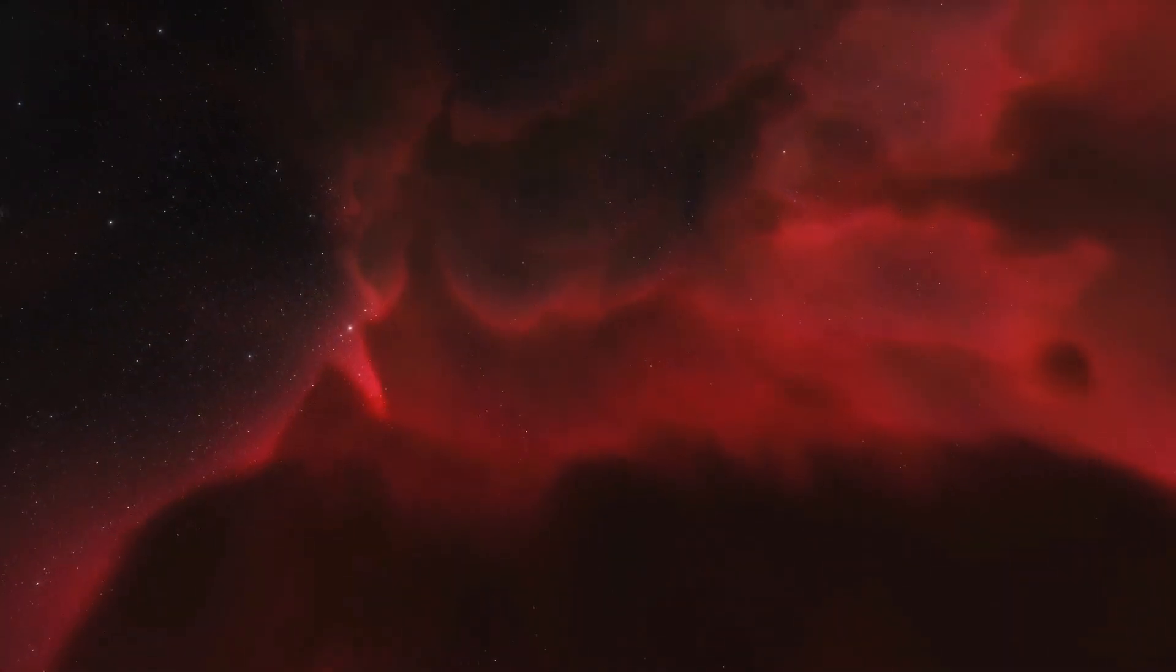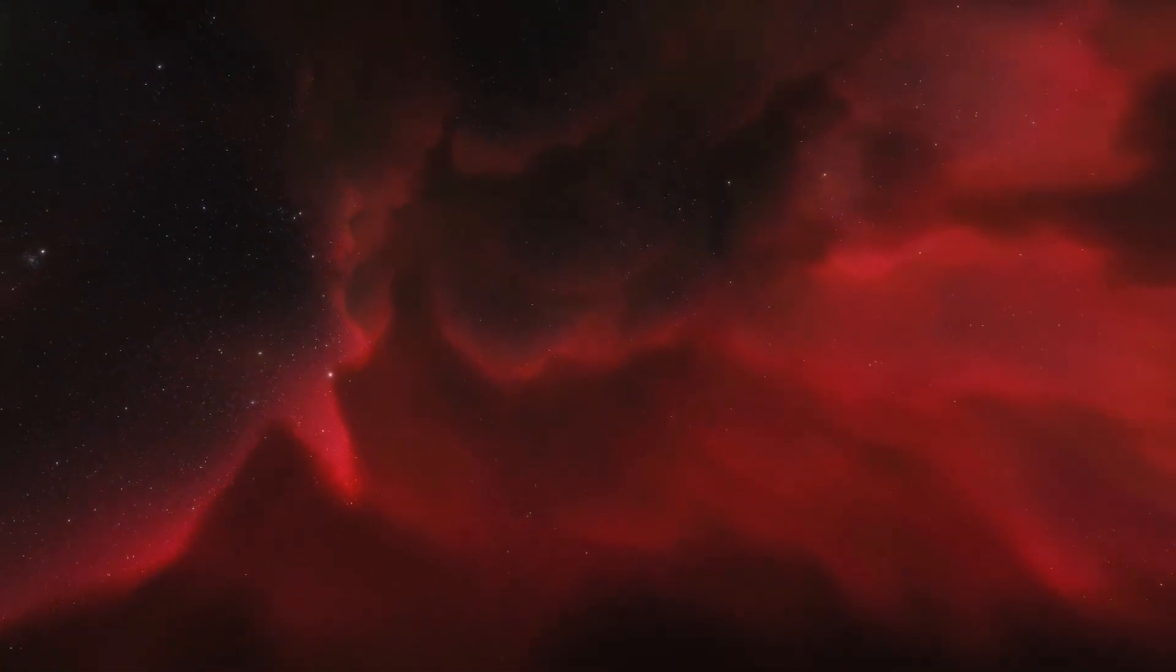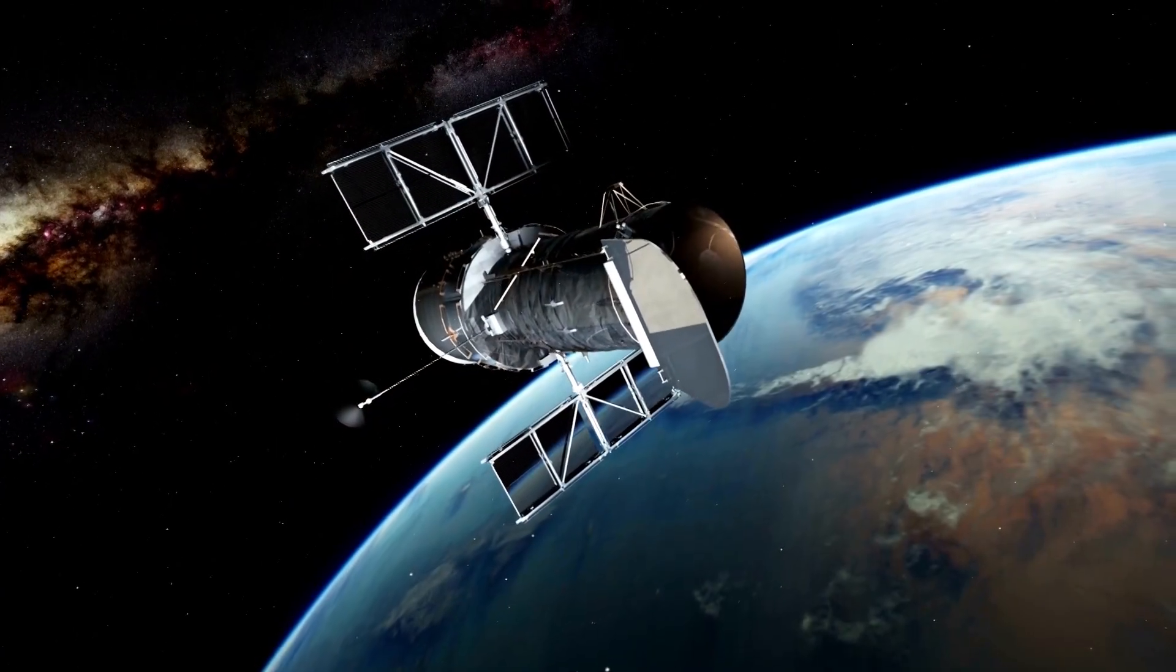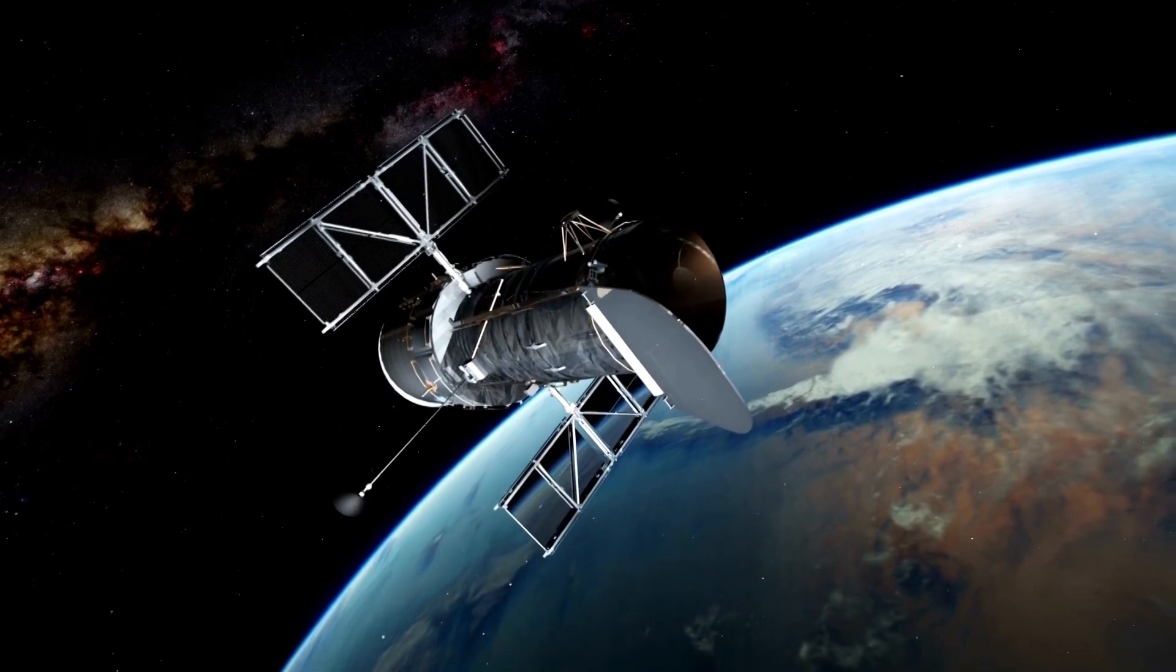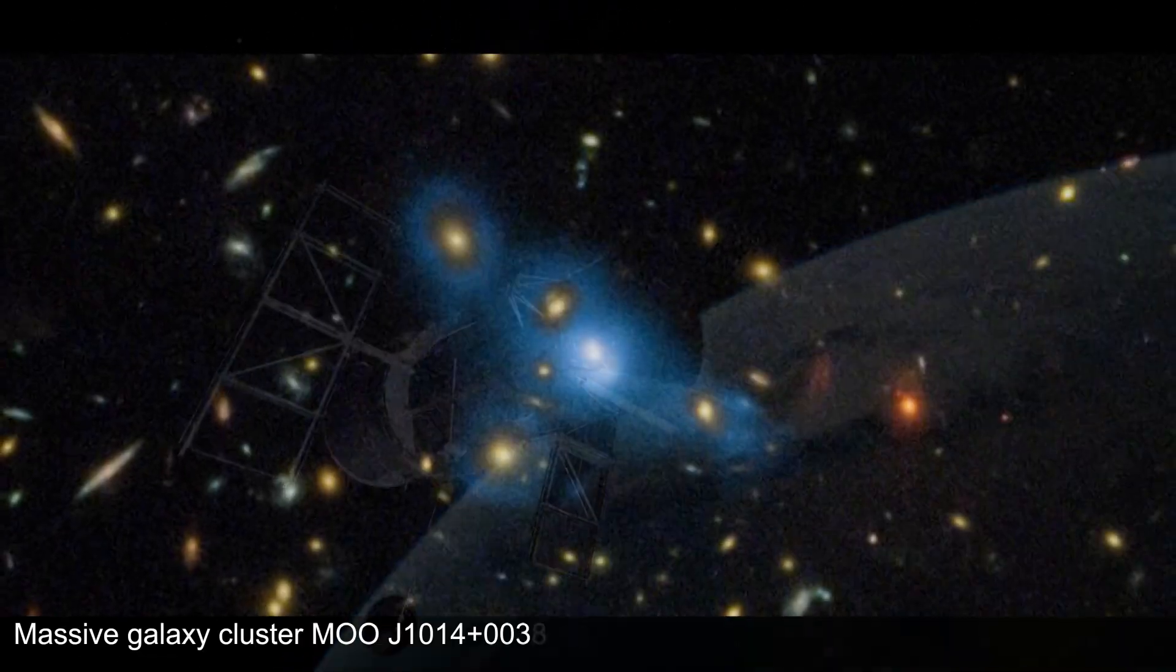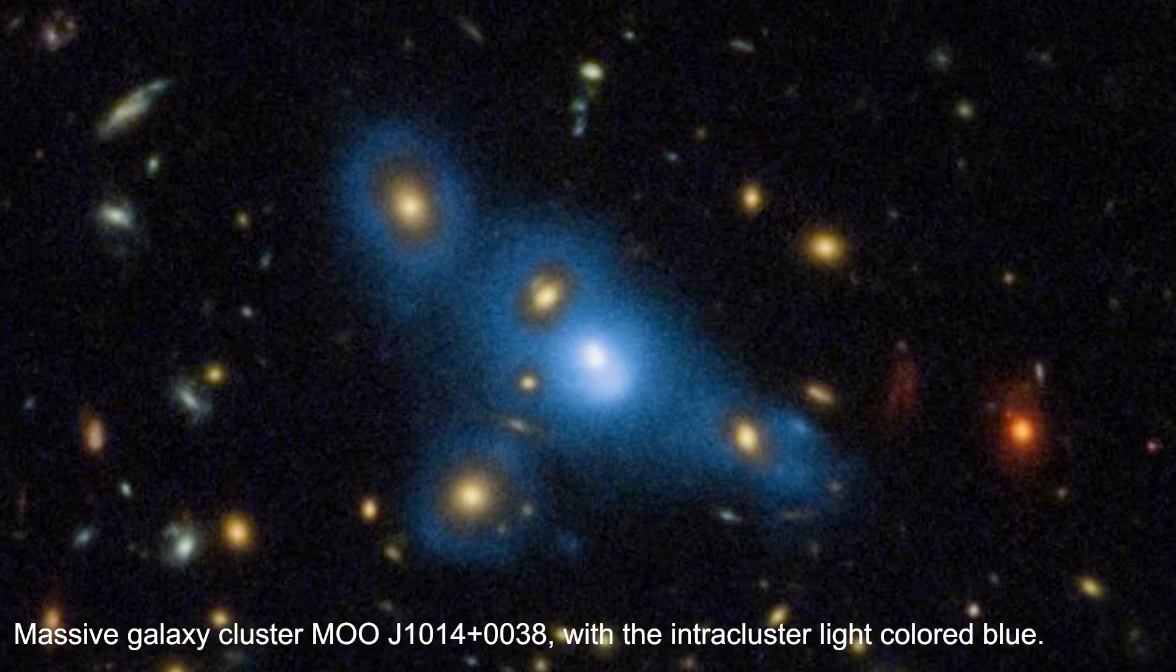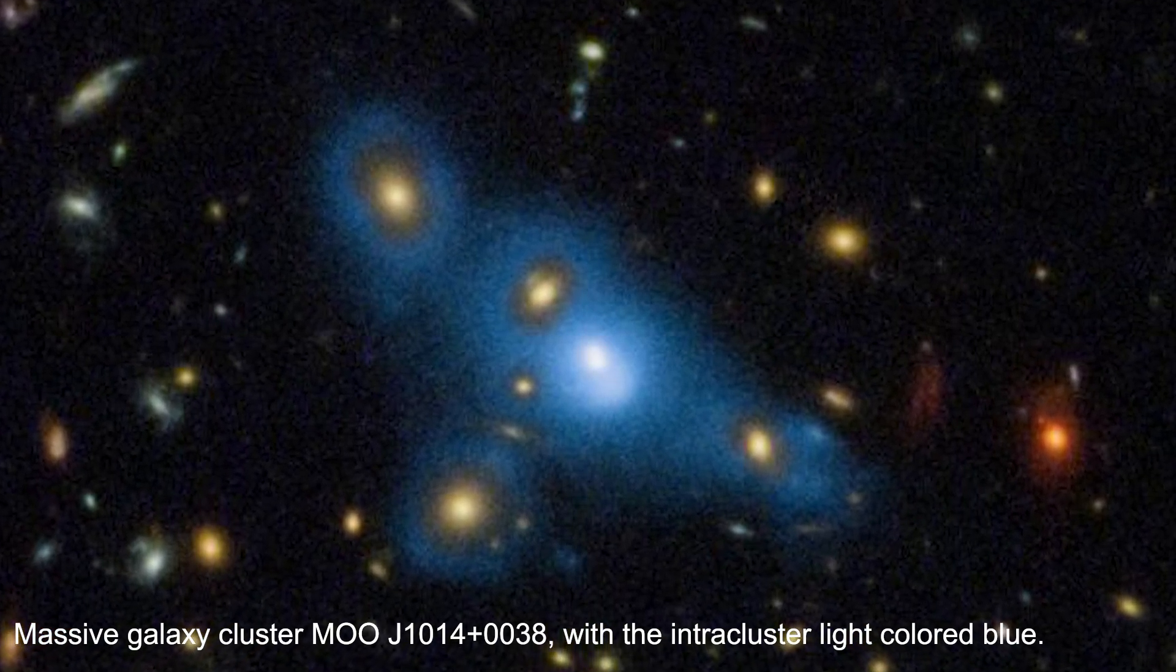To find out more about the cosmic infrared background and the role that homeless stars may have played in its creation, researchers used the Hubble Space Telescope to study ten galaxy clusters. They found that the cosmic infrared background was not evenly distributed throughout the universe, but rather was concentrated around these galaxy clusters.